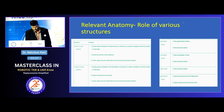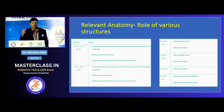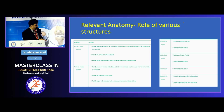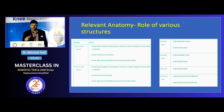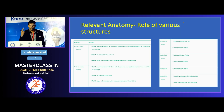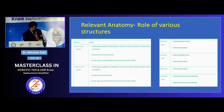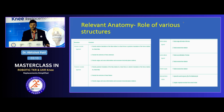It is important to understand that no single structure works in isolation. The ACL and PCL, besides providing anterior and posterior stability, also provide rotational stability and resist hyperextension. Similarly, the collateral ligaments, besides providing varus and valgus stability, also prevent hyperextension of the knee.